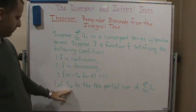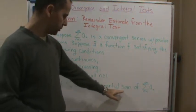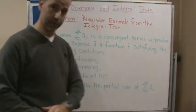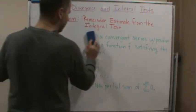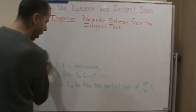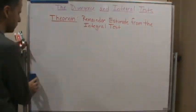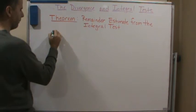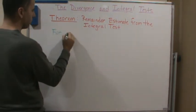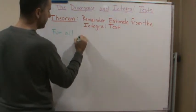Also, let S_N be the nth partial sum of the series. So now, with that being said, this is what we know — and this must hold for all positive integers n. If all these conditions and assumptions are given, then that means for all positive integers n the following is true.